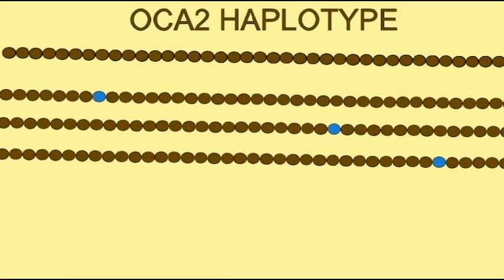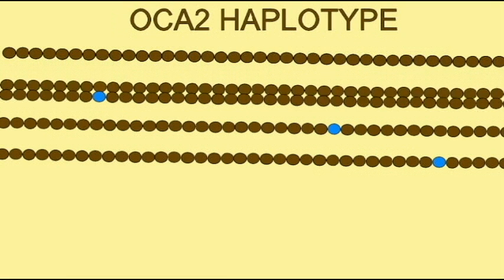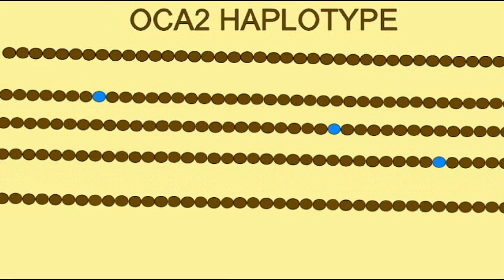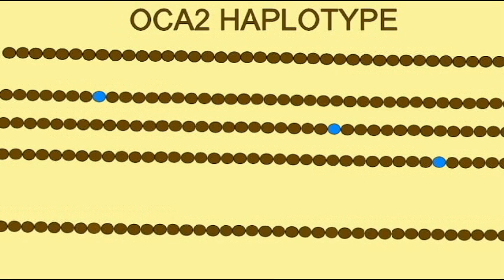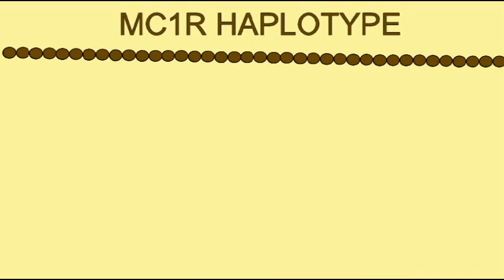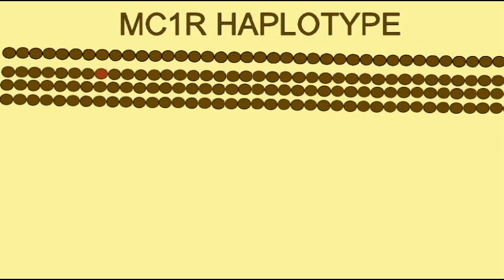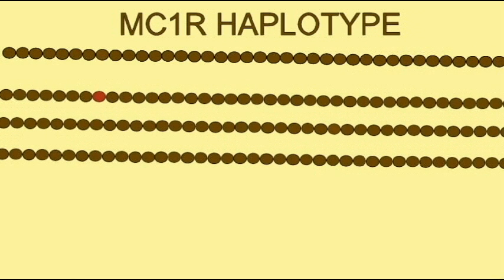Certain combinations of changes to the MCR1 gene would be required for red hair, while one individual change might result in red hair being produced only rarely. And so this idea of haplotype — which combinations of changes does one have in a sequence — becomes important.